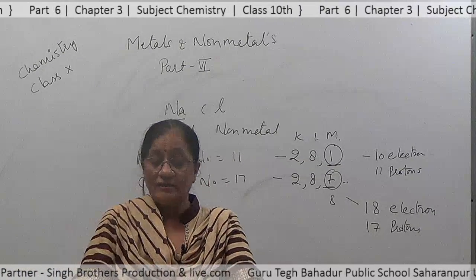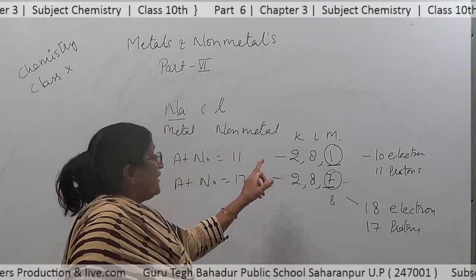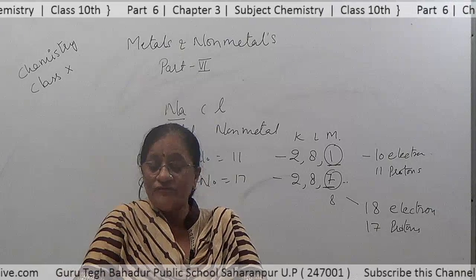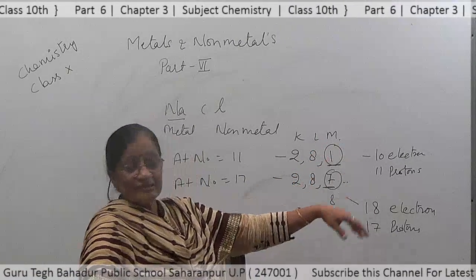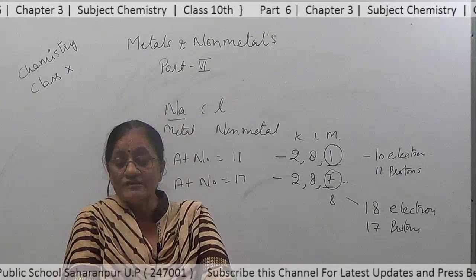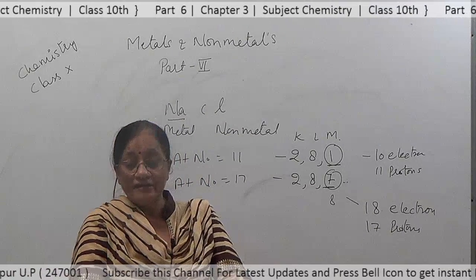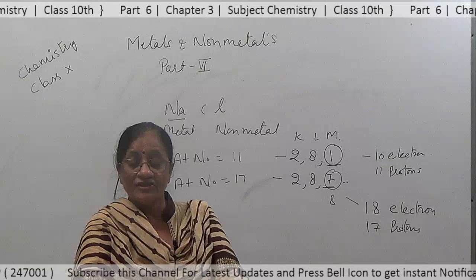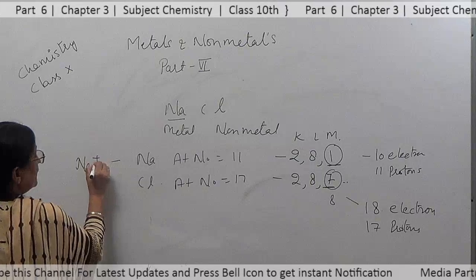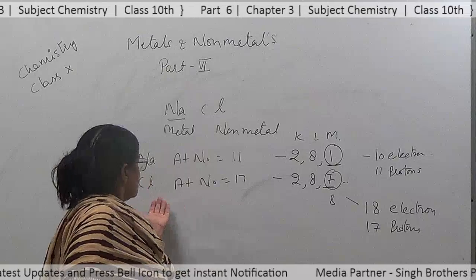So in both cases: sodium's outermost orbit has 1 electron, it easily loses that electron from the M shell. Its nucleus has 11 protons but only 10 electrons, resulting in a net positive charge — giving us a sodium ion, Na⁺.